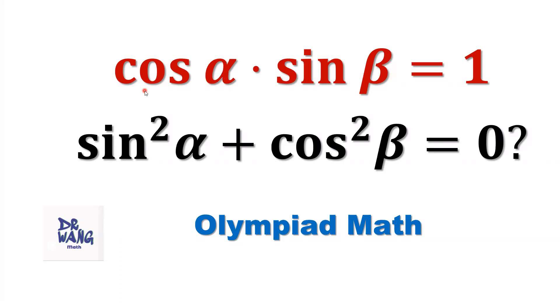If cosine of alpha times sine of beta equals one, we want to check if sine squared alpha plus cosine squared beta equals zero.